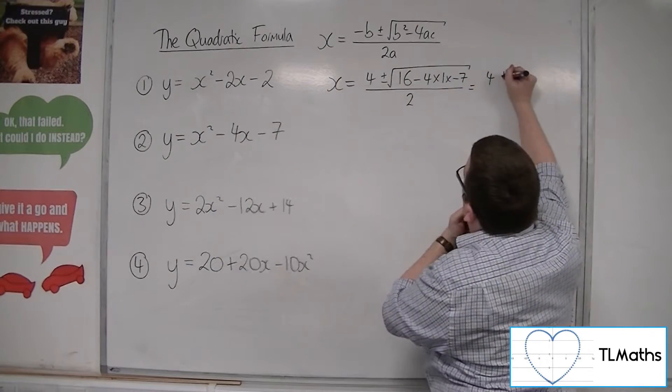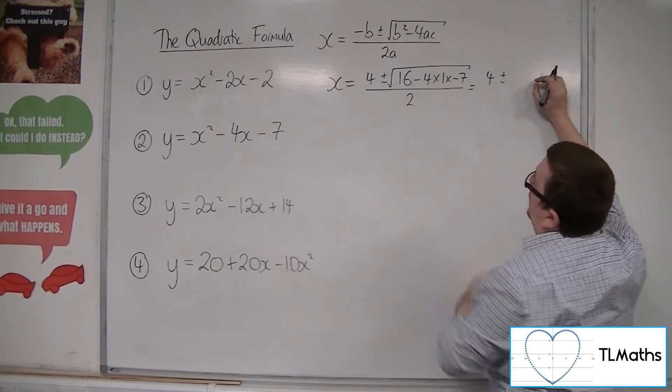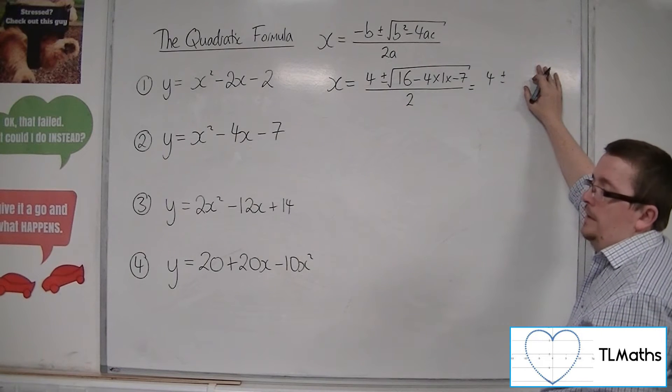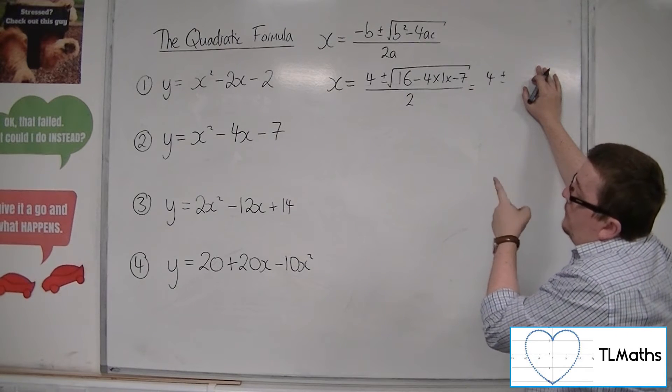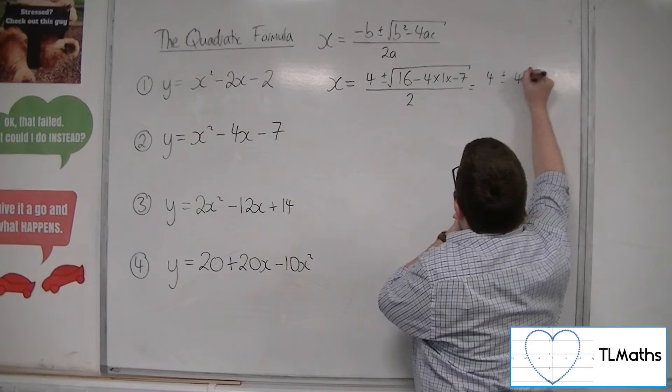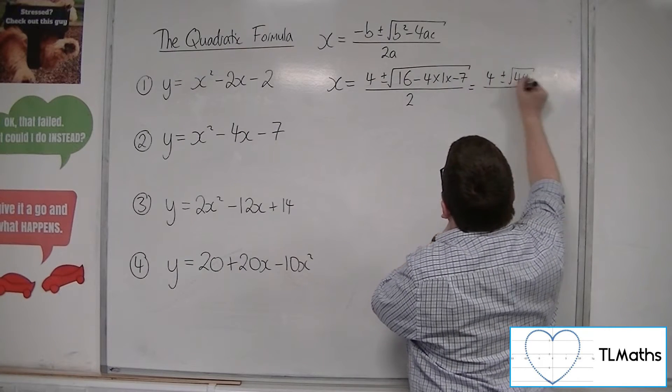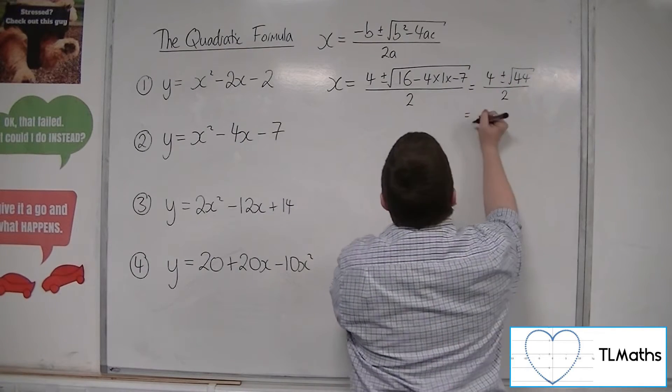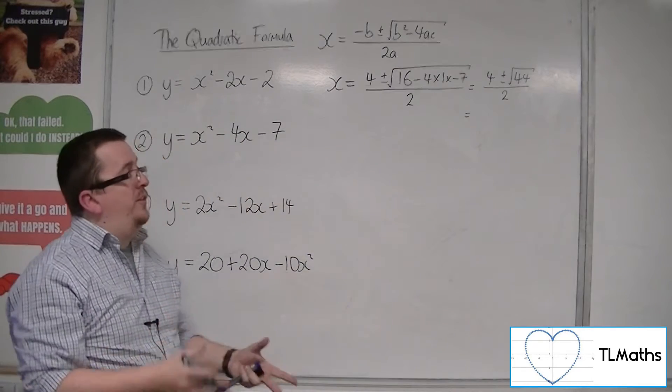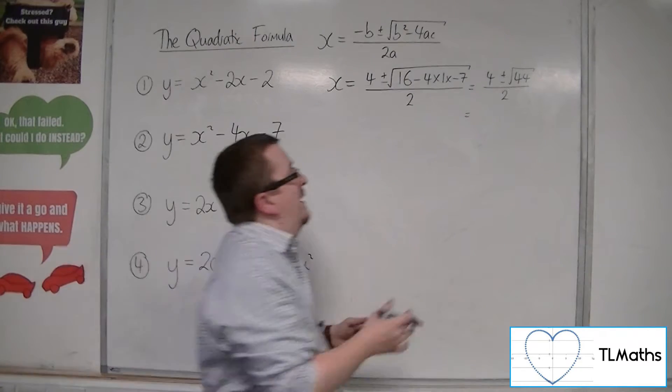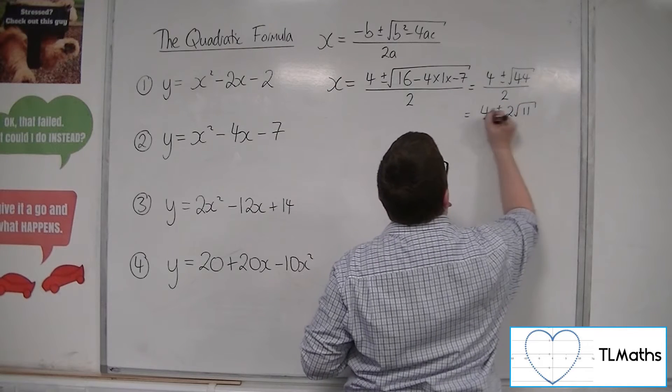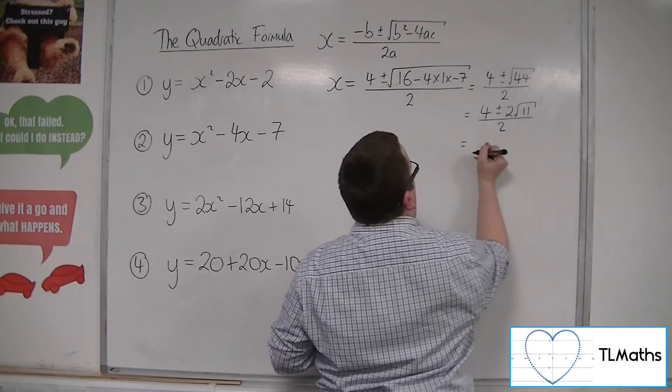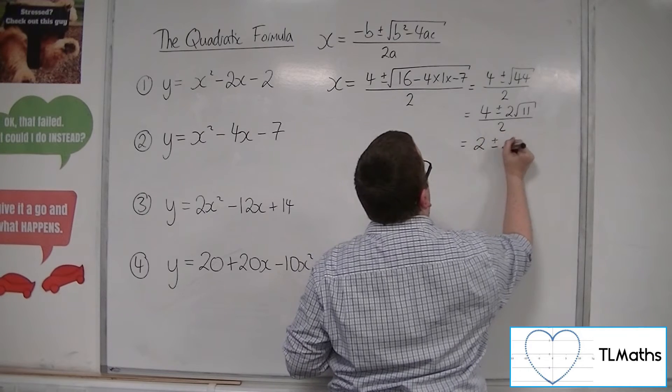So 4 plus or minus. 4 sevens are 28. So 28 plus the 16 is 34, 44. So square root 44 all over 2. Now root 44 can be simplified to 2 root 11. So 4 plus or minus 2 root 11 over 2. And that, of course, can be simplified to 2 plus or minus root 11.